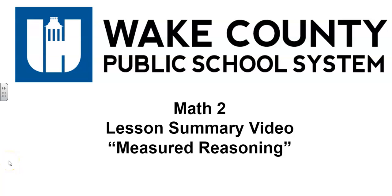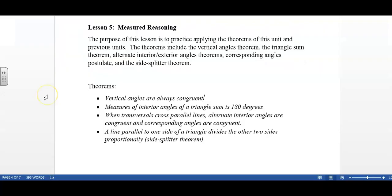This is the Math 2 Lesson Summary Video for the lesson entitled Measured Reasoning. In Lesson 5, Measured Reasoning of Unit 7, the purpose of this lesson is to practice applying the theorems of this unit and previous units. The theorems include the vertical angles theorem, the triangle sum theorem, alternate interior and exterior angle theorems, the corresponding angles postulate, and the side splitter theorem from the previous task.